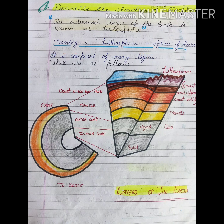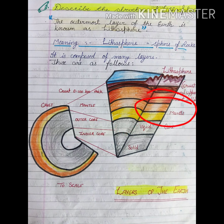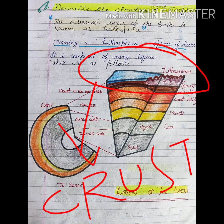To understand this topic well, I will define it in points. The lithosphere is composed of many layers: the innermost part is called the core, the middle part is called the mantle, and the outer part of the earth is called the crust. Let's start from the core.